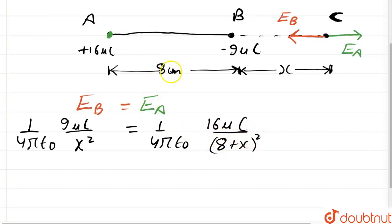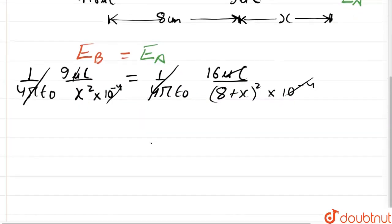Here we have taken the distance in centimeters. When we convert to meters, we get 10⁻⁴ on both sides, which cancel out. The microcoulombs and the 1/4πε₀ terms also cancel from both sides.